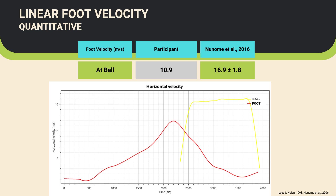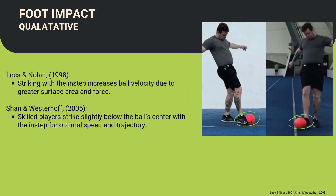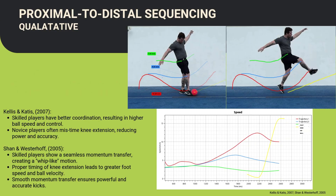The participant measured a lower velocity than those measured by Nanou May's non-experienced players. Foot contact time is brief but crucial. According to Lees and Nolan, shorter contact times with higher force application lead to more effective energy transfer, and Nanou May and colleagues found that optimal contact times range between 10 and 15 milliseconds. Sharnam Westerhoff found that skilled players understand how to strike slightly below the ball center to optimize trajectory and speed. Proper proximal to distal sequencing ensures smooth and powerful transfer of momentum. As highlighted by Kellis and Catus, skilled players show better coordination resulting in higher ball velocity, and effective timing of knee extension and hip flexion is key. This whip-like motion or successful tension arc results in smoother momentum transfer for higher velocity and accurate kicks.